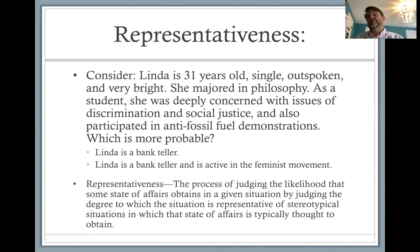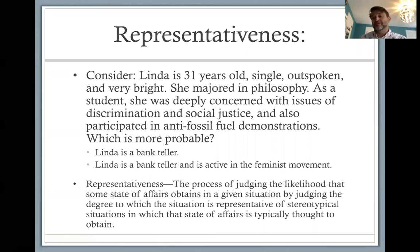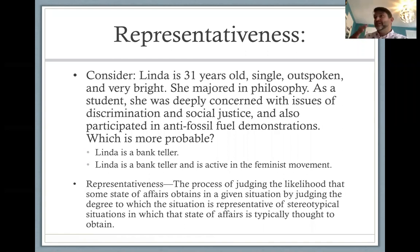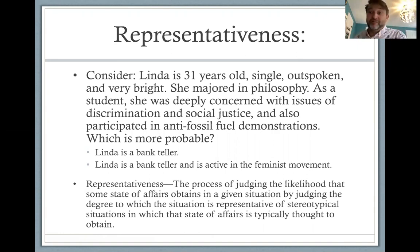What's going on is we're falling victim to the representativeness process — the process of judging the likelihood that some state of affairs obtains in a given situation by judging the degree to which the situation is representative of stereotypical situations in which that state of affairs is typically thought to obtain. The idea of Linda being a bank teller and active in the feminist movement seems more representative of what we were told about Linda, so we judge it the more likely outcome. We're replacing the question of 'how likely is this outcome?' with the easier question 'which one fits my stereotype better?'